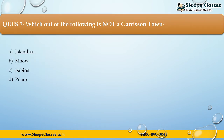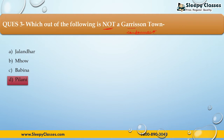The next question is: Which of the following is not a garrison town? First, Jalandhar; Second, Mau; Third, Babina; Fourth, Pilani. Garrison towns refer to cantonment areas. The correct answer is option D — Pilani — because Pilani is an educational town, not a cantonment area. You need to remember these city names.